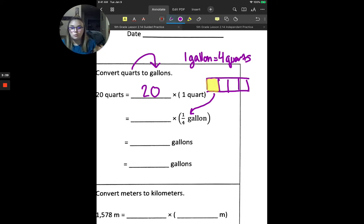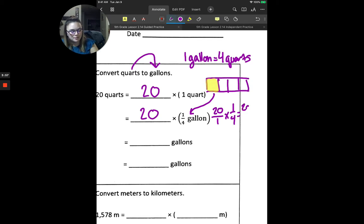So 20 times 1 quart, we can think of as being 20 times 1 fourth gallons. And then we can multiply. So we can think of this as 20 over 1 times 1 over 4. When we multiply this, we can also think of it as 20 times 1 over 1 times 4. Which will give us 20 over 4. 20 fourths. So if we were to shade in 20 fourths, or we were to model 20 fourths, we would have a total of 5 gallons. 4 times 5 gives us 20. So 20 divided by 4 gives us 5.